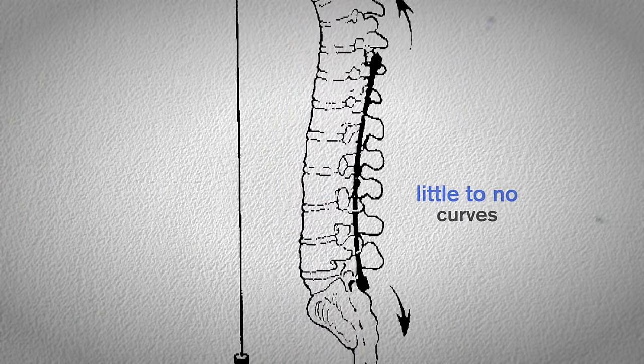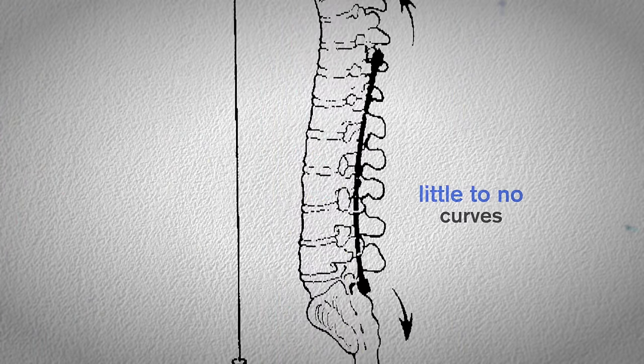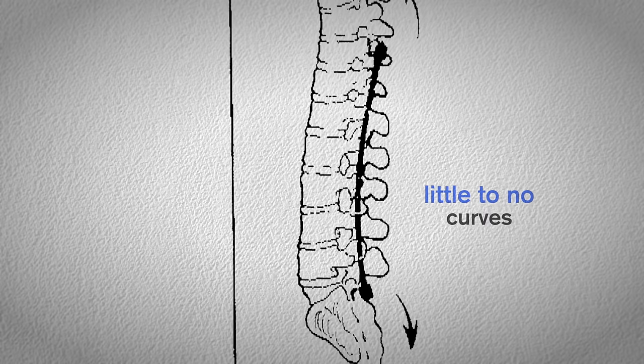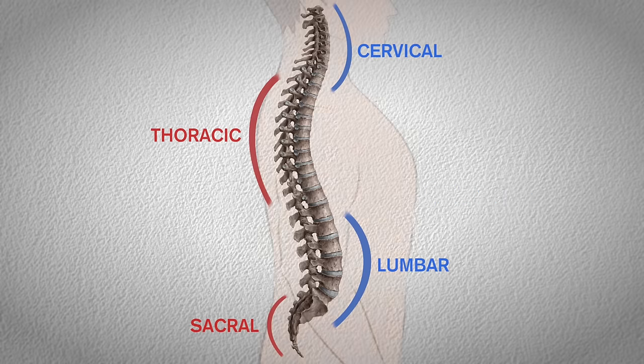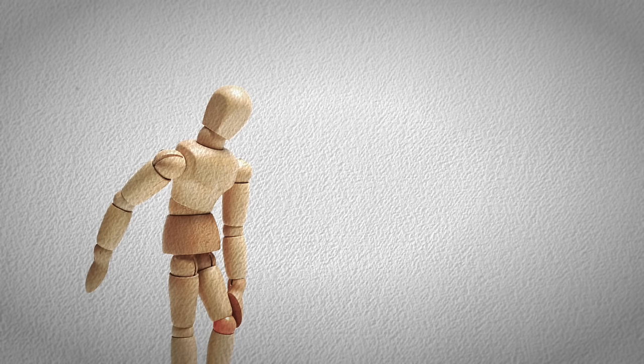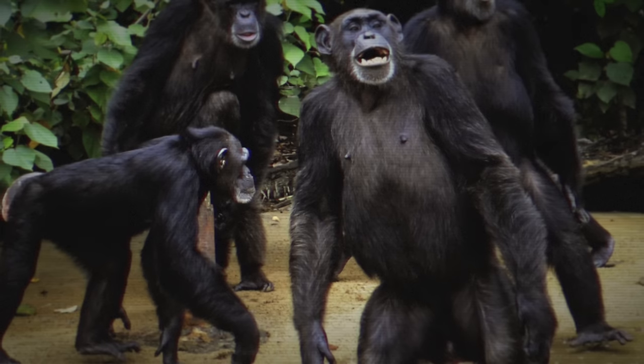What would happen if we considered the opposite condition? What if you had little to no curves in your spine — what if you're a flat back? The loss of normal lordosis and kyphosis would be harmful. With such a flat spine, you would have terrible difficulty even standing up straight.